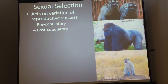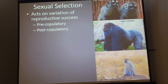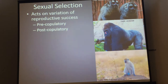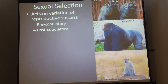Sexual selection acts on the variation of reproductive success, and this can happen through both pre- and post-copulatory systems. Pre-copulatory is basically when individuals are competing for access to mates, and so by different individuals acquiring more mates than others, you get this variation. A typical example would be this gorilla with his large size — he's able to sequester a lot of females, so there's a lot of selection going on before he even mates.